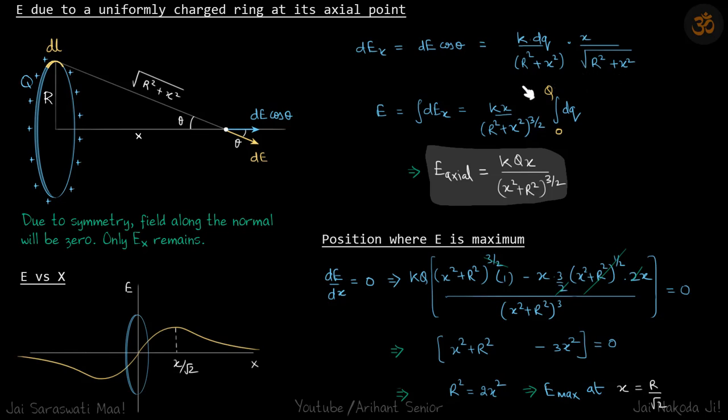We integrate this and put the value of dq, which will be q because everything else is constant. So E at an axial position is k q x divided by (x² + r²)^(3/2). Now if you plot this curve, it will look like this.